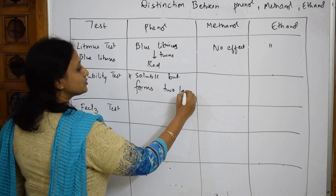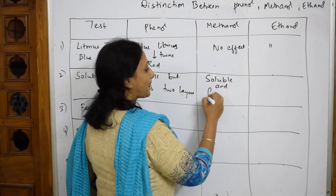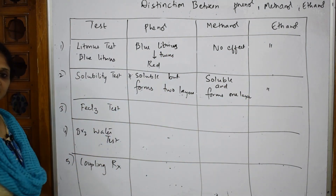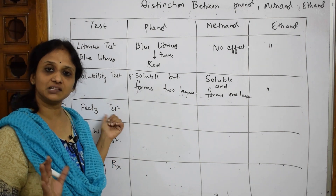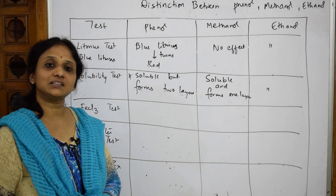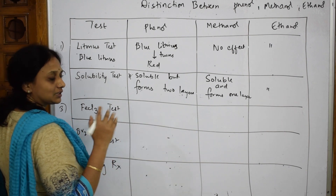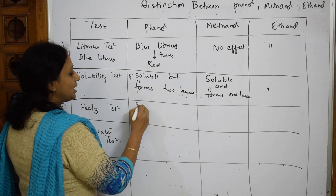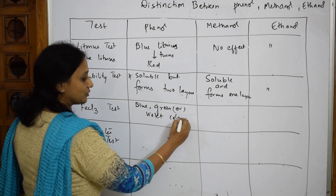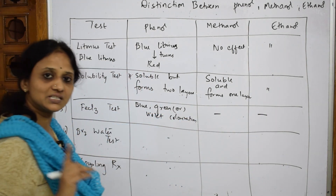Methanol is soluble and forms one layer; ethanol is also similar — soluble and forms one layer. For the neutral FeCl₃ test: take a given amount of the sample and add neutral FeCl₃. The color of the neutral FeCl₃ solution will change — for phenol, you get either blue, green, or violet coloration observed.